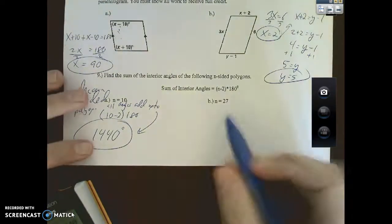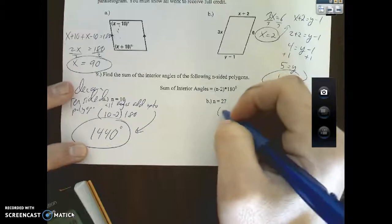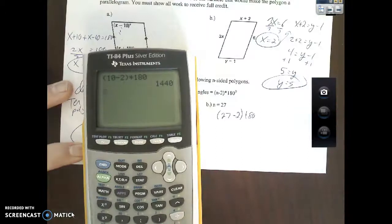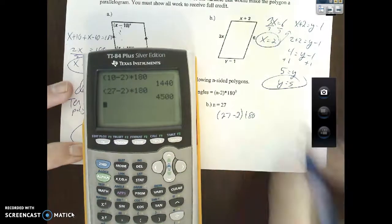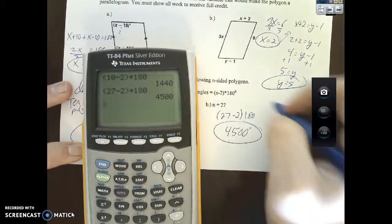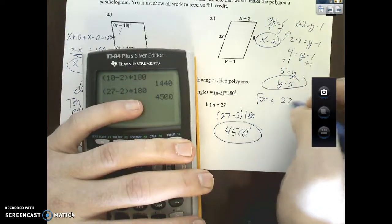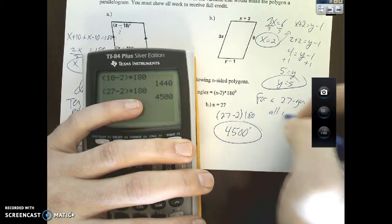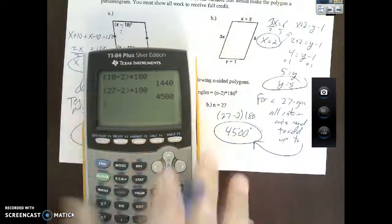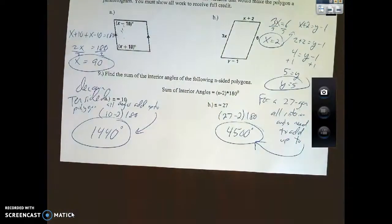Now where does it really come in handy? Look at part B, n equals 27, so I can plug in 27 for n times 180. Back to here: 27 minus 2 times 180, the answer is 4500 degrees. So for a 27-gon, all interior angles need to add up to 4500.